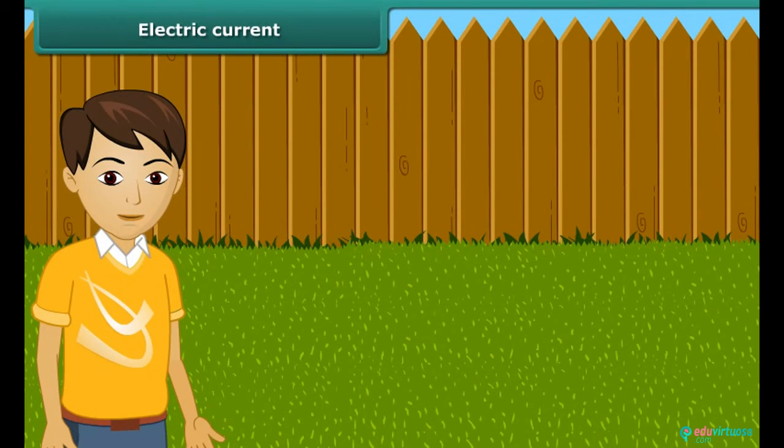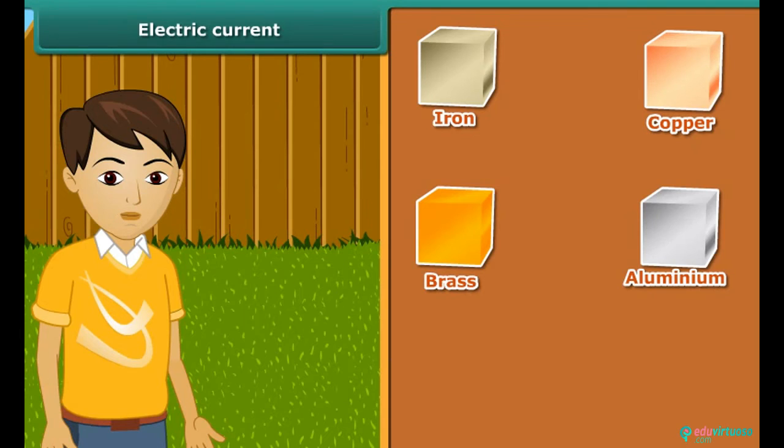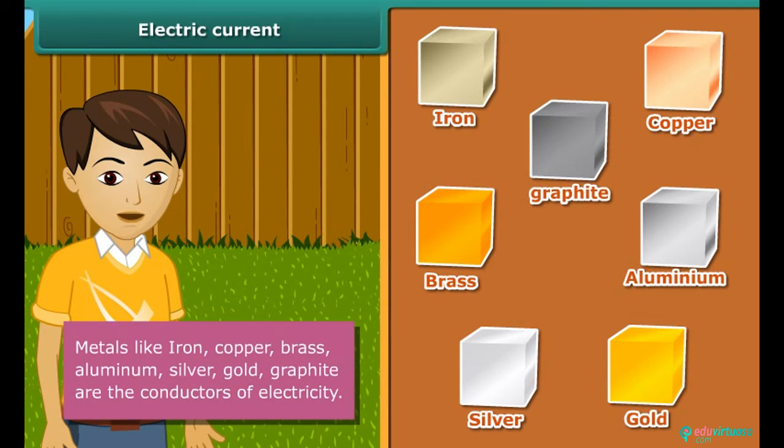Some materials allow electric current to pass through them, others do not. The materials that allow electric current to pass through them are called conductors. Iron, copper, brass, aluminum, silver, gold, graphite, etc., are conductors of electricity. The materials through which electric current doesn't flow are called insulators.